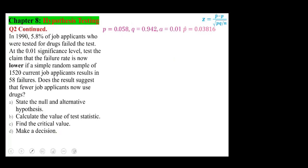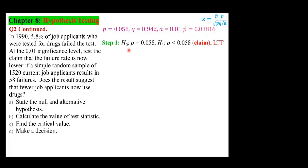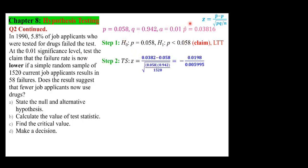So in this case, the given: P is 0.058, Q was calculated at 0.942, alpha is 0.01, and P-hat is 0.03816. First, H₀: P = 0.058. H₁: P < 0.058. Less than makes it a left-tail test, and this is the claim. Plugging into the formula results in a test statistic of negative 3.309.